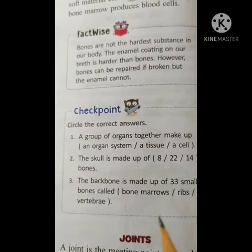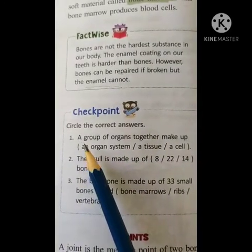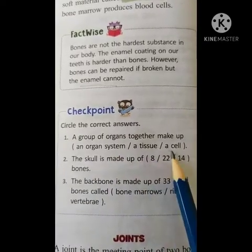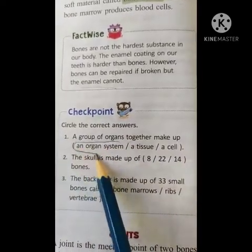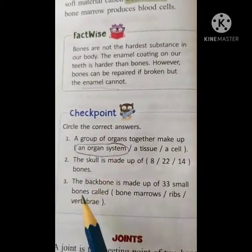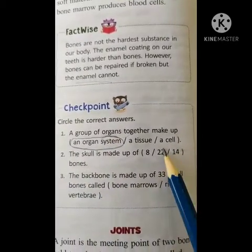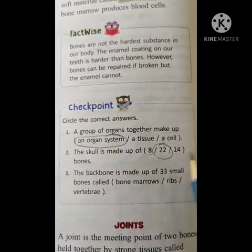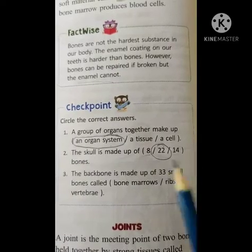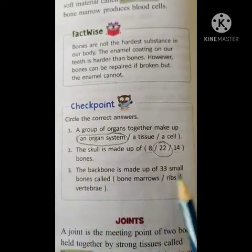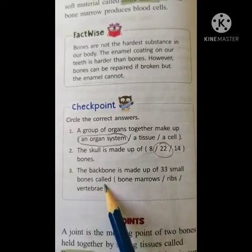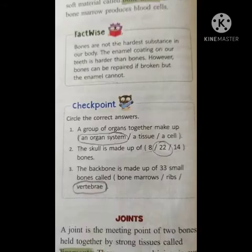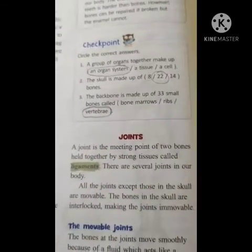Checkpoint children: a group of organs together make up an organ system, tissue or a cell — that is organ system, please circle it. The skull is made up of 22 bones — eight flat bones and 14 facial region bones. The backbone is made up of 33 small bones called vertebrae, not ribs, not bone marrow.